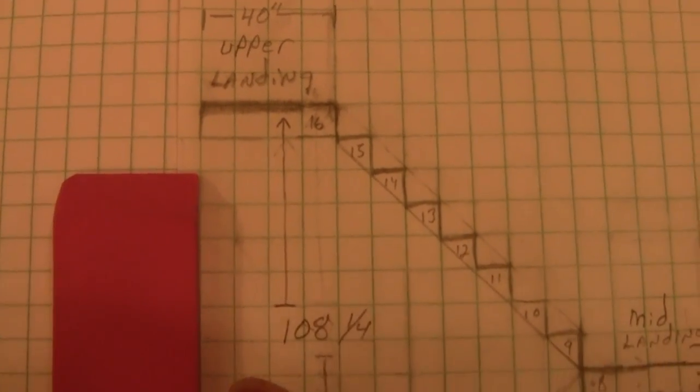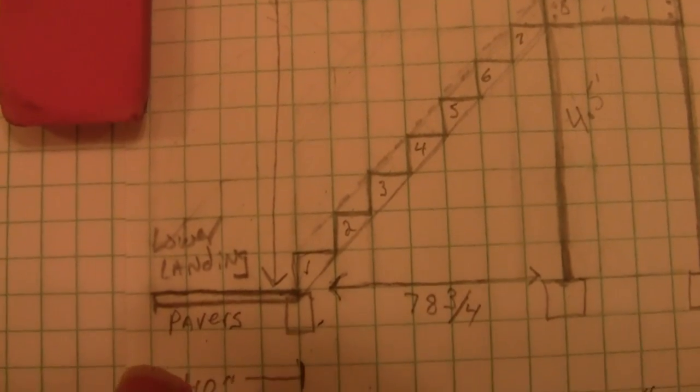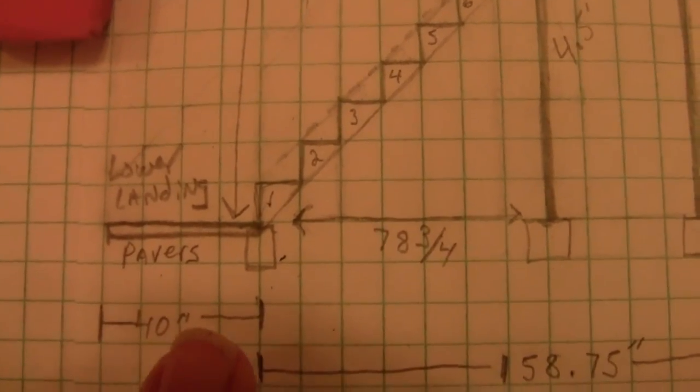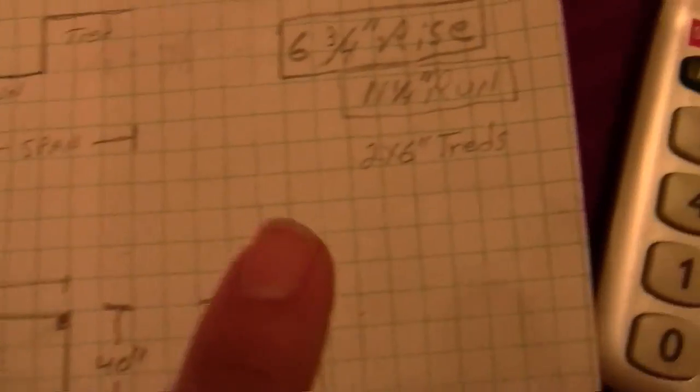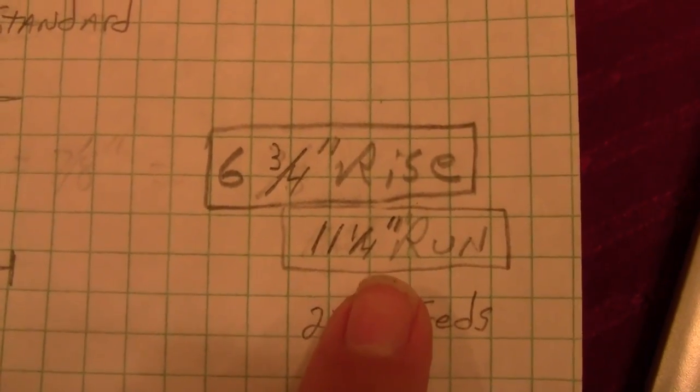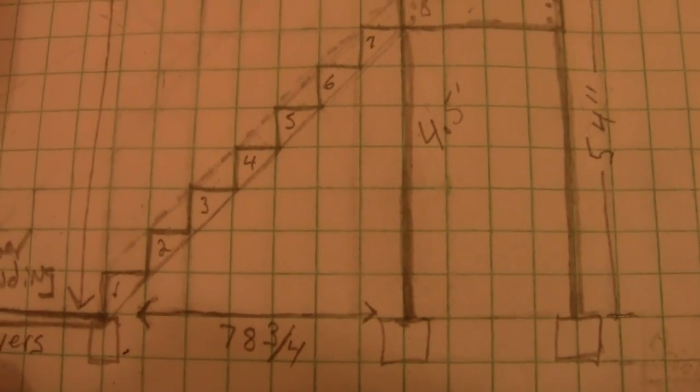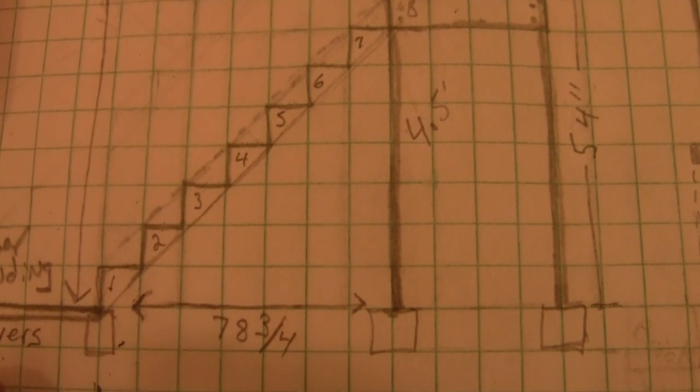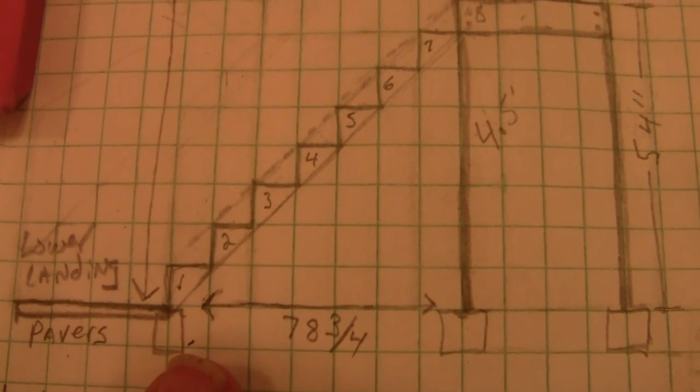So, that my stairs start and stop kind of on the same horizontal or vertical plane. Now, also, just having these numbers laid out for you, the rise and the run can tell you just how far you need to set your mid-landing away from your lower landing.